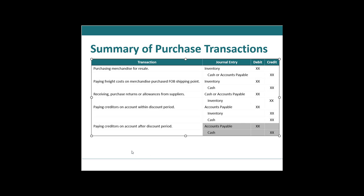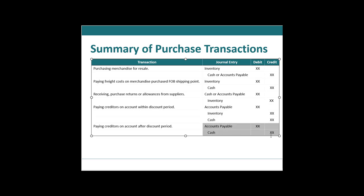Think about it this way: you need to record the liability at the full amount when you make the commitment. The moment you pay, you determine whether it was early — recognize that discount — or whether it was later but still within the net 30 terms, in which case no discount but you still remove the Accounts Payable. Thank you so much, and I will see you in the next video.